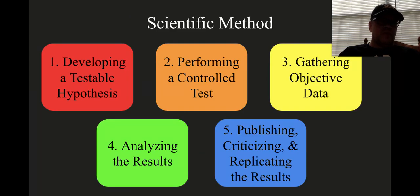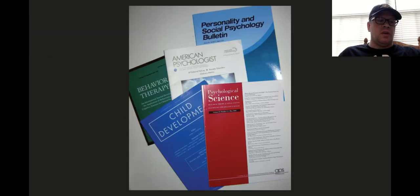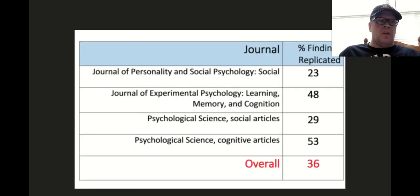The fifth step of the scientific method is publishing, criticizing, and replicating the results. The results must be communicated through publication or other type of presentation to the scientific community to determine if the findings will hold up to criticism and replication. Replicating results involves repeating an experiment to see if the same results are going to be obtained if you did it again.